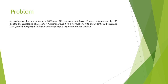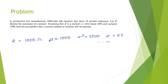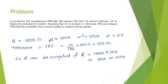Problem: A production line manufactures 1000-ohm resistors with 10% tolerance. Let X denote the resistance, assumed to be a normal random variable with mean mu = 1000 and variance sigma² = 2500. Find the probability that a randomly picked resistor will be rejected. From the given data: mu = 1000, sigma² = 2500, so sigma = sqrt(2500) = 50.